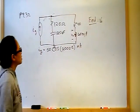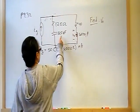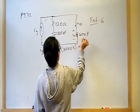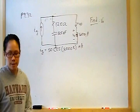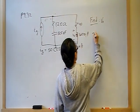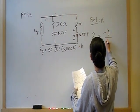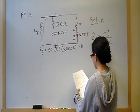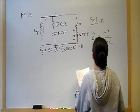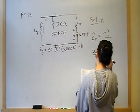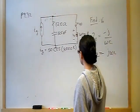We can't use KVL or KCL directly — we first need to convert the capacitor and inductor into their equivalent impedances. The capacitor impedance is negative J over omega C, and the inductor impedance is J omega L.